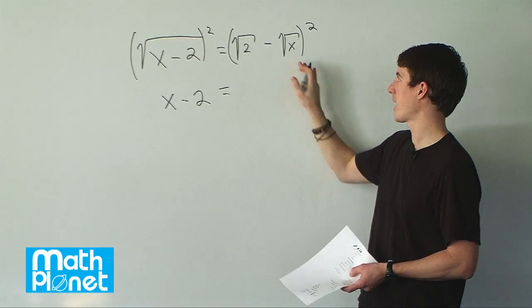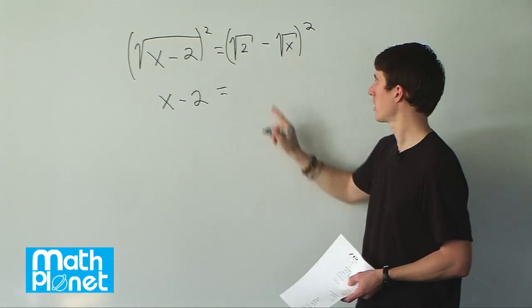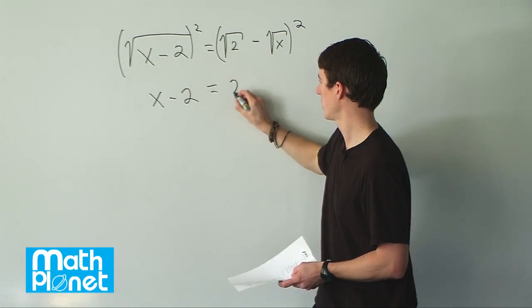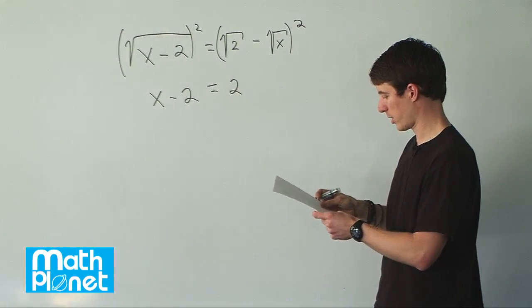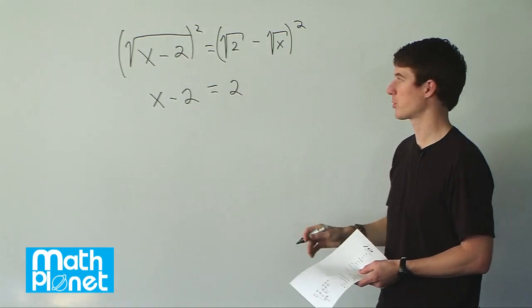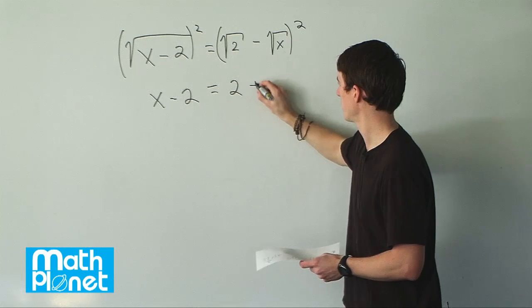So the first terms, the last terms, and then the cross terms. The first term gives us root 2 times root 2, which is of course just 2. Then the last term times the last term, negative root x times negative root x, which is just x.